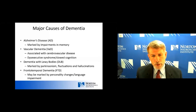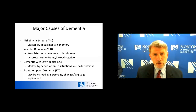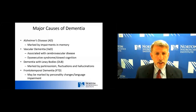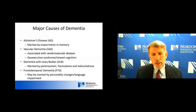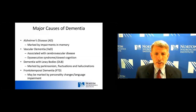Let's talk about some of the major causes of dementia. The most common cause is Alzheimer's disease, marked most notably by impairments in memory. Next is vascular dementia, or vascular cognitive impairment, which is obviously associated with cerebrovascular disease. We often see a dis-executive syndrome — more difficulty planning, managing affairs — and often a slowed cognition.